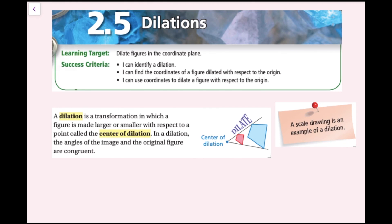A dilation is a transformation in which a figure is made larger or smaller with respect to a point called the center of dilation. In a dilation, the angles of the image and the original figure are congruent. The center of dilation is shown in the image, and a scale drawing is an example of a dilation.